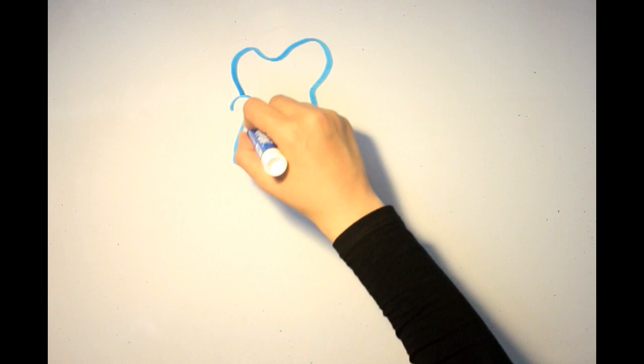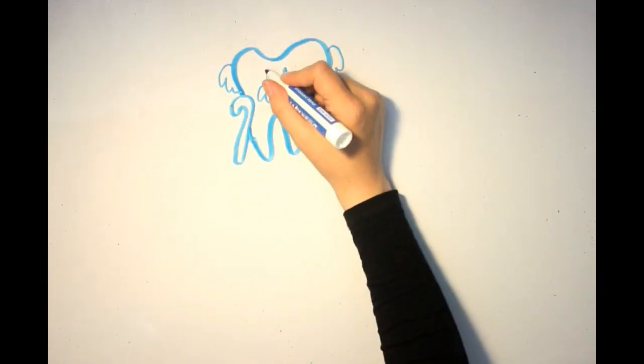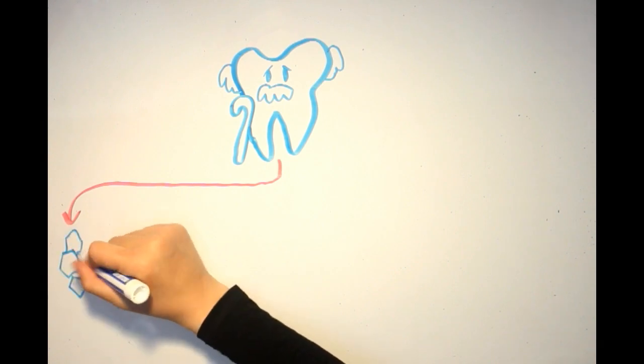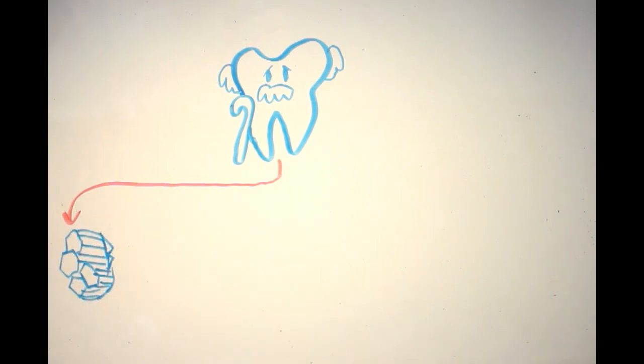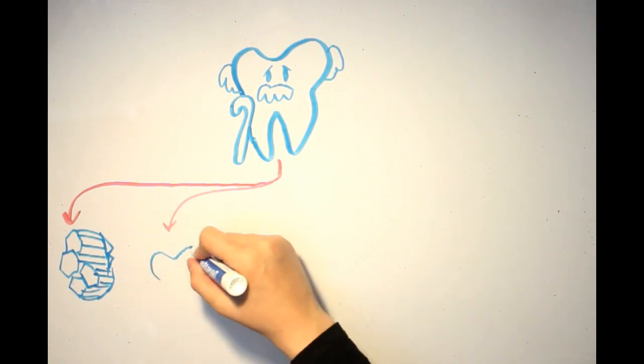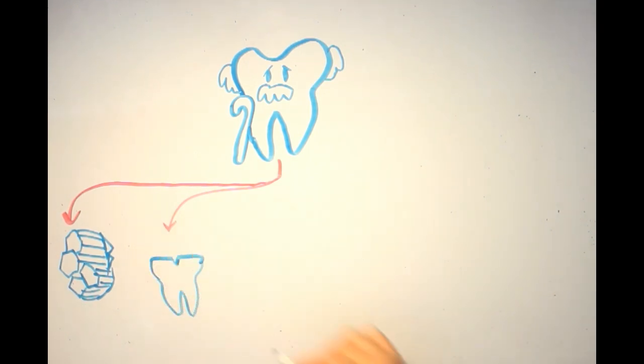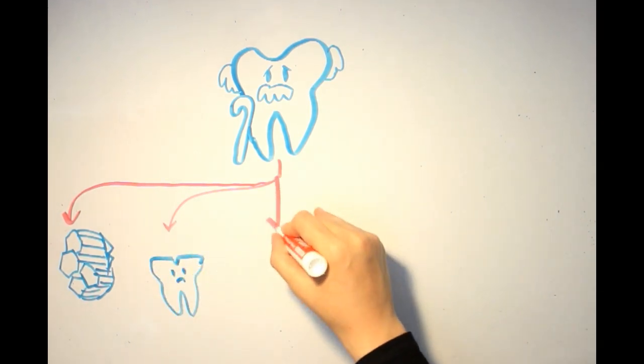As you age, so does your enamel. First of all, the enamel becomes less permeable due to a reduction in the spaces between the crystals. Your teeth may also become more sensitive due to attrition and wear.